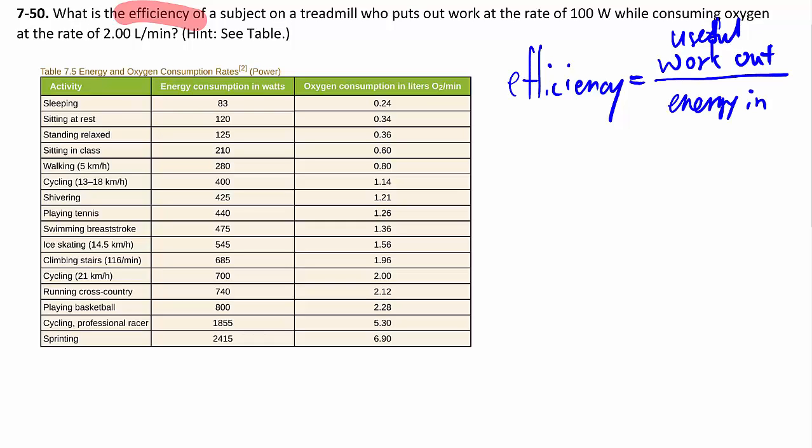Since these both happen over the same time, you can also talk about useful power out over power in. And that's the whole idea of efficiency. Sometimes you multiply by 100% just to make it a percentage, and that's it.